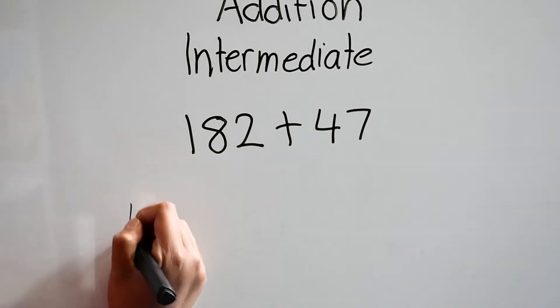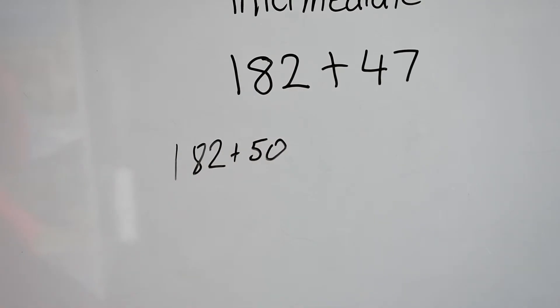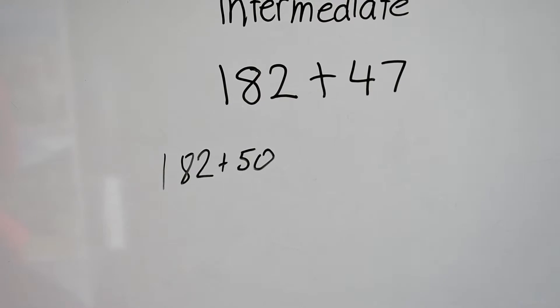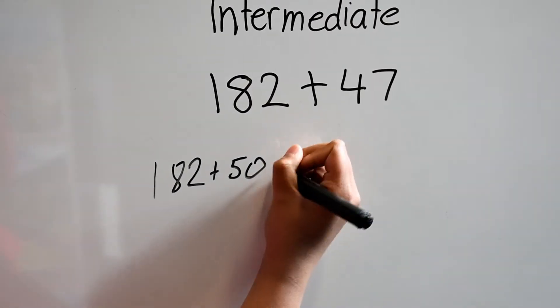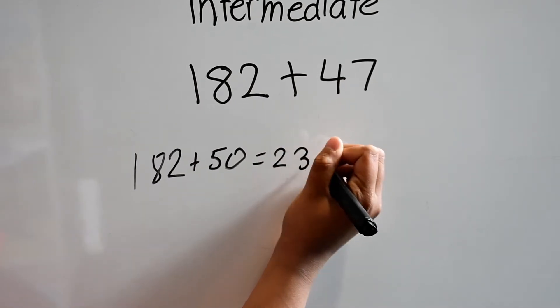We add 182 plus 50 because we round 47 to the nearest 10 as it is easier to add. This equals 232.